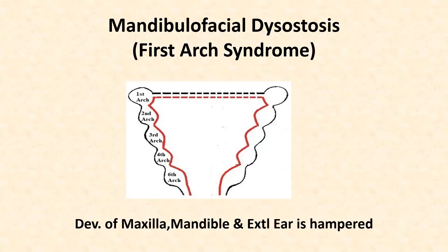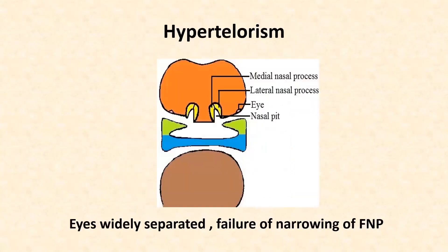Next is hypertelorism. During development, the eyes first form directed laterally, and it is due to narrowing of the frontal nasal process that the eyes come to face forwards. When there is failure of narrowing of the frontal nasal process — shown in orange in the figure — the eyes remain directed laterally and do not face forwards. This condition, where the eyes are widely separated, is referred to as hypertelorism. With this, I complete the class on anomalies of development of face.